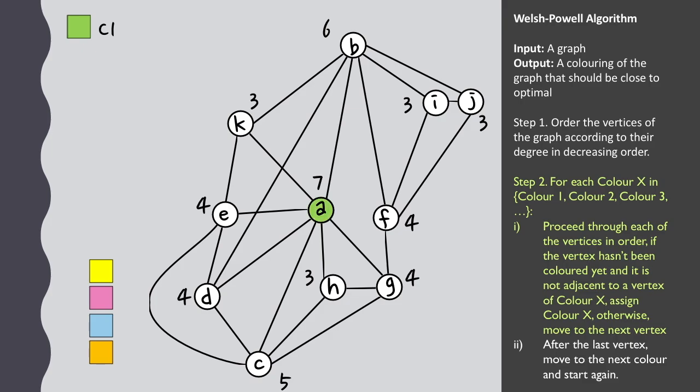For the first color we'll of course assign a this color, but then b, c, d, e are all connected to a. f isn't, so it can also be assigned this color, then g and h are connected to a. i and j are connected to f and k is connected to a as well.